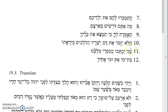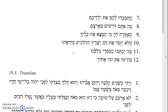Number ten: halo yizkor et dam yashabav. Will he not remember the blood of his upright ones? Ha-holachim, the ones walking, beyirato, in his reverence — those are the ones who walk in fear of him.